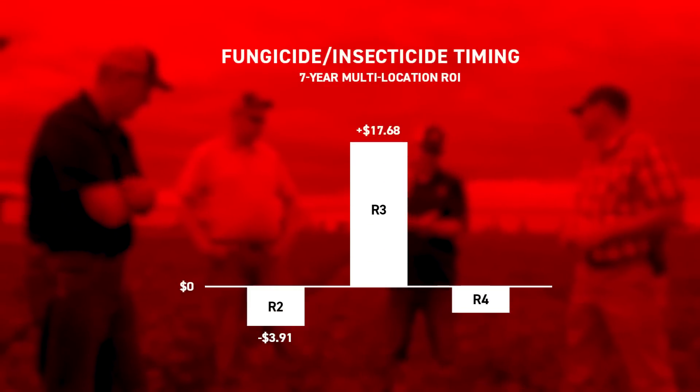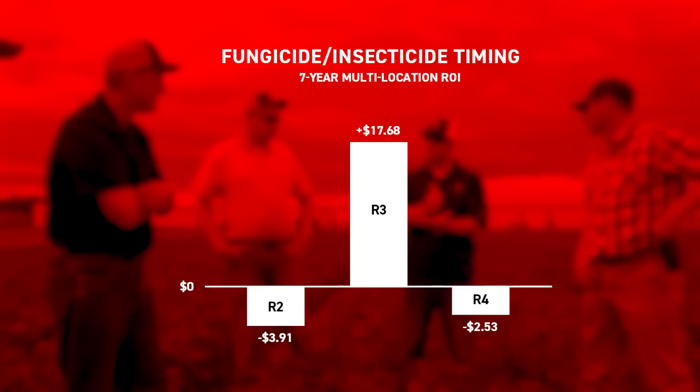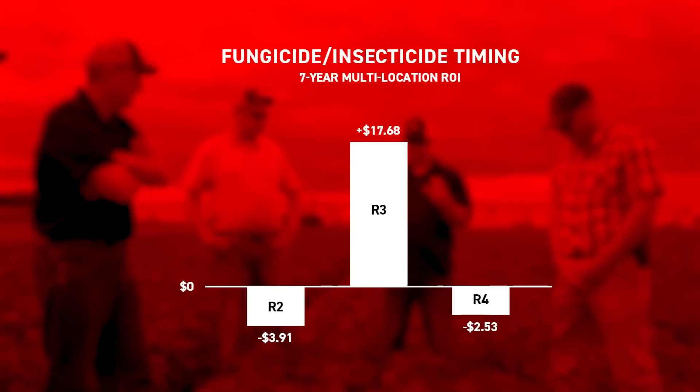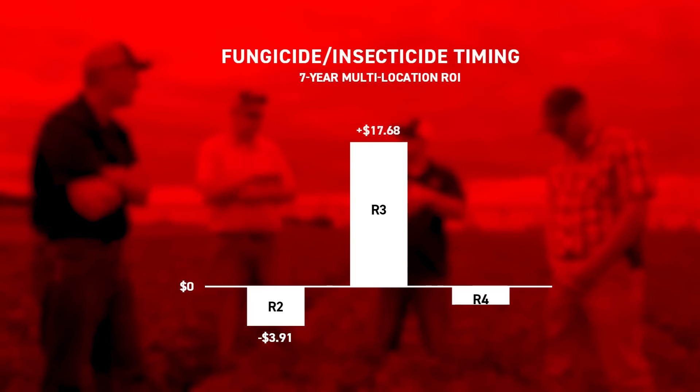We've done a lot of research on R2, R3, and R4 fungicide applications, and R3 is that sweet spot. Going R2 or R4 doesn't give as great a yield advantage as hitting R3 right on the money. It's a PFR-proven practice to spray fungicide at R3, so it's critical that you really try to time that out very well.